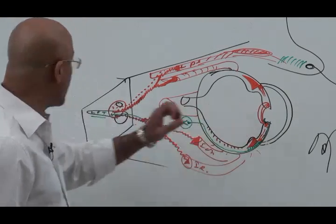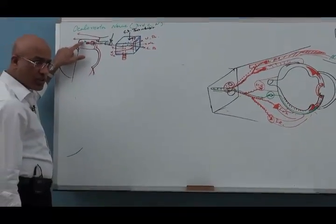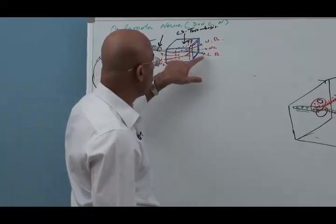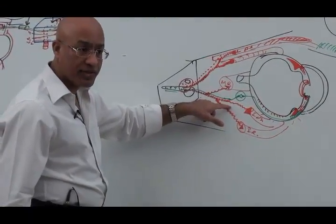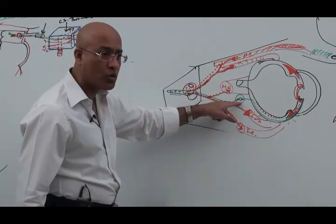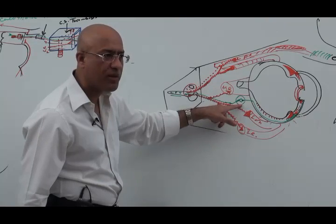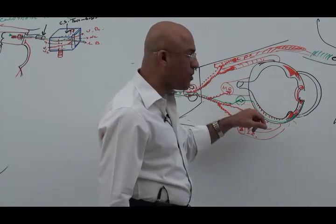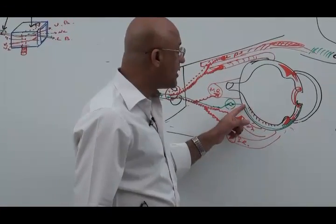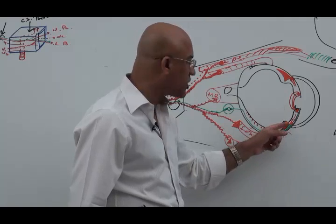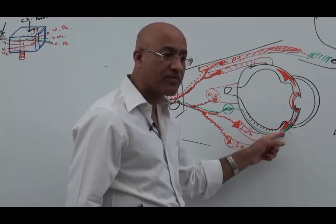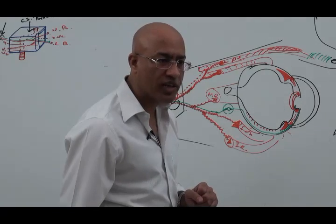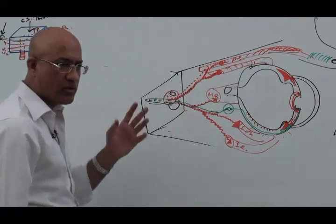So Edinger-Westphal nucleus gave preganglionic fibers which originated from the midbrain, went along the somatomotor fibers of third cranial nerve and eventually went into its inferior division and branched to the inferior oblique, then exited as a short root to ciliary ganglion. There they terminate as preganglionic fibers and postganglionic parasympathetic fibers emerge as components of short ciliary nerves and enter the eyeball while piercing the sclera, run between sclera and the choroidal layer and approach the ciliaris. About 95% or more fibers are given to ciliaris and remaining fibers eventually innervate the constrictor pupillae.